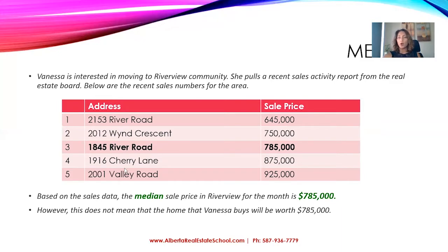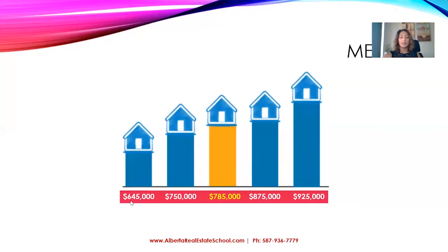When the real estate board talks about median sale price, that's what they're talking about. In that particular neighborhood, there will be houses that sell for a lower price and others that sell for a higher price. However, this is the number right in the middle. Even though properties sold anywhere from $645,000 to $925,000, the median price was $785,000 — right in the middle of the sequence of numbers.